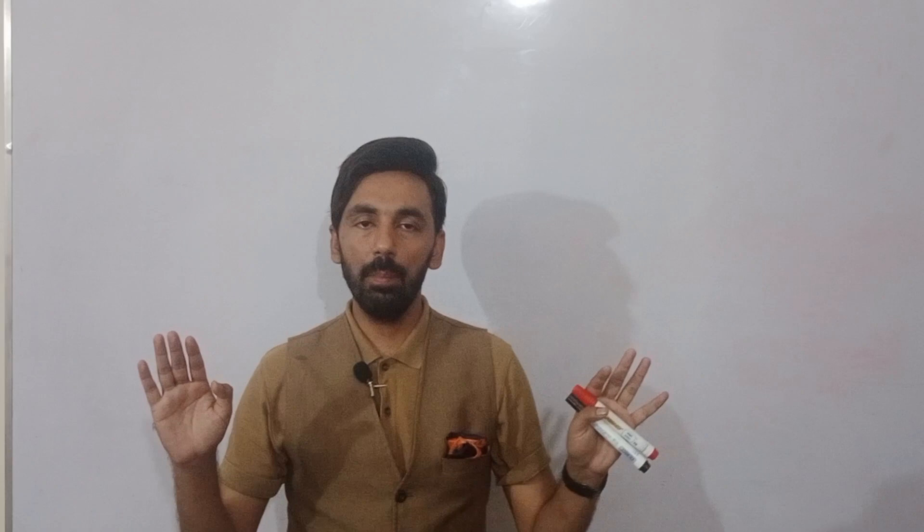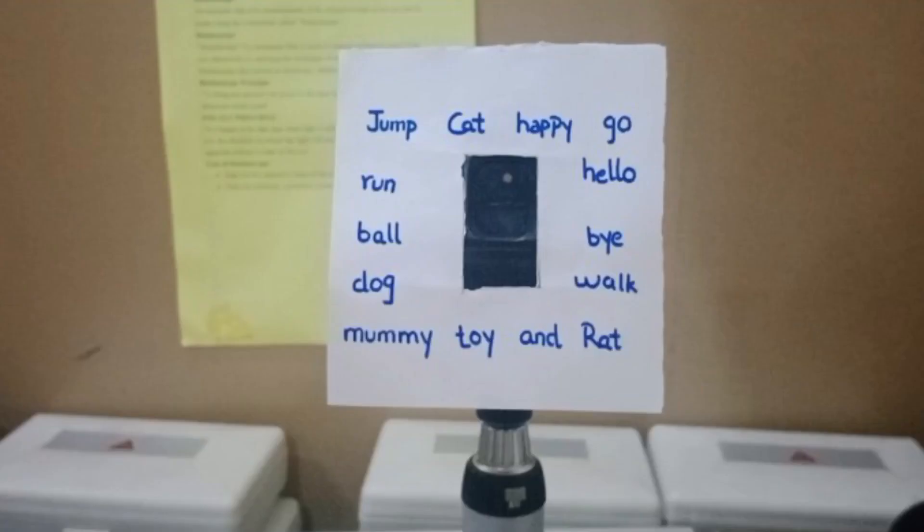For the requirements of the MEM method of dynamic retinoscopy: first, your room illumination should be dim, but the illumination system of the retinoscope should be very bright. The room illumination should be dim. You also need to put a special series of cards on the head of the retinoscope, as you can see on the screen.